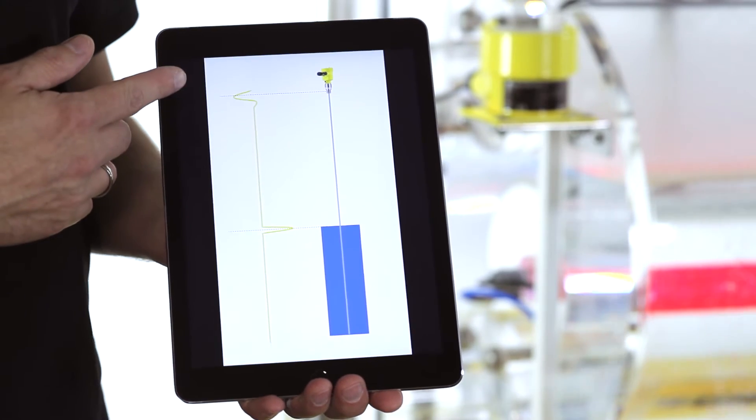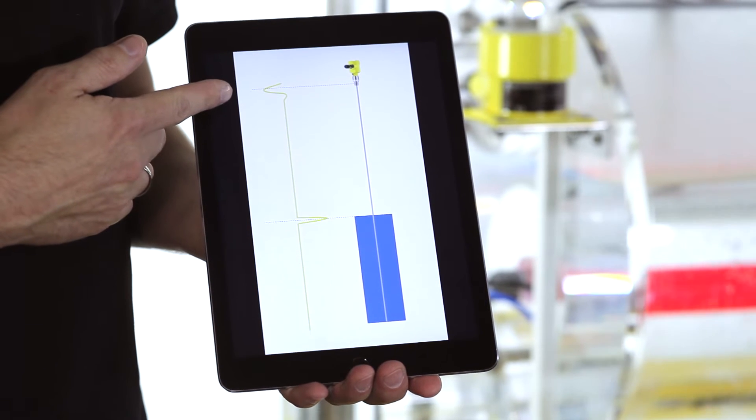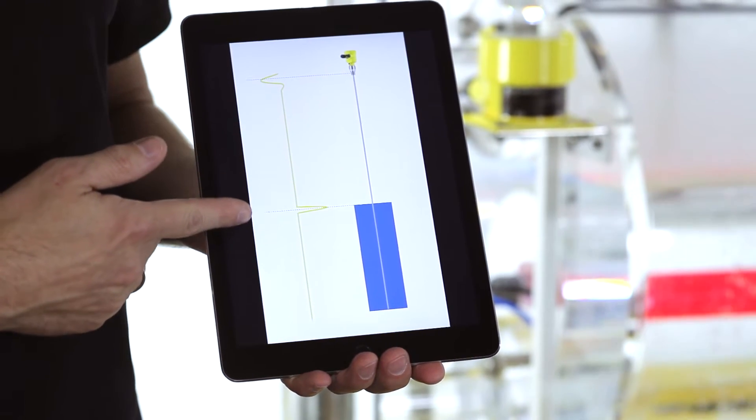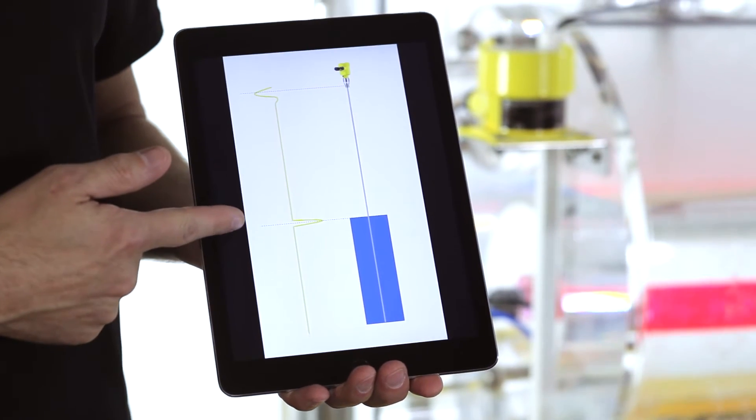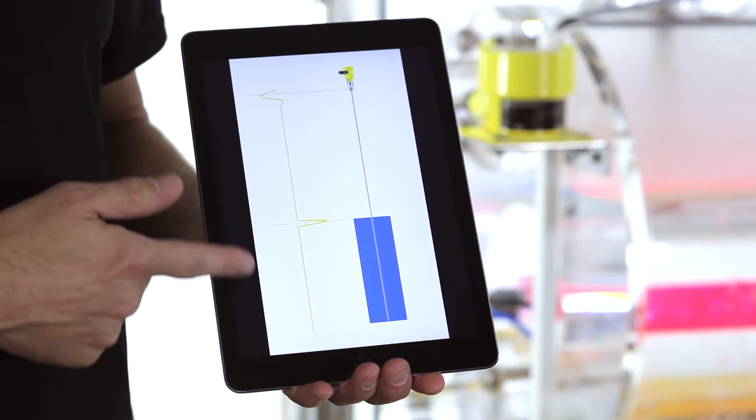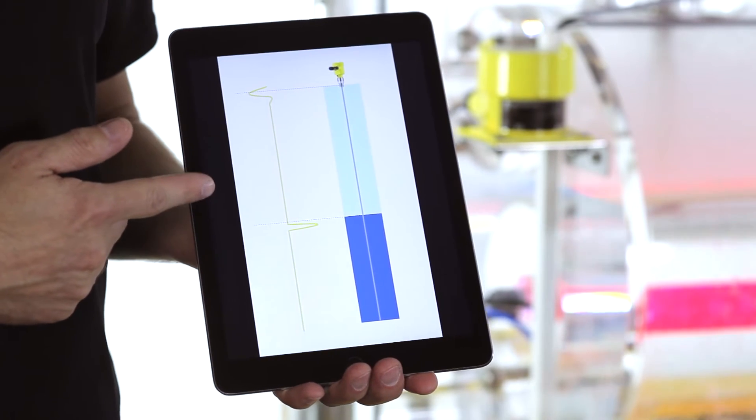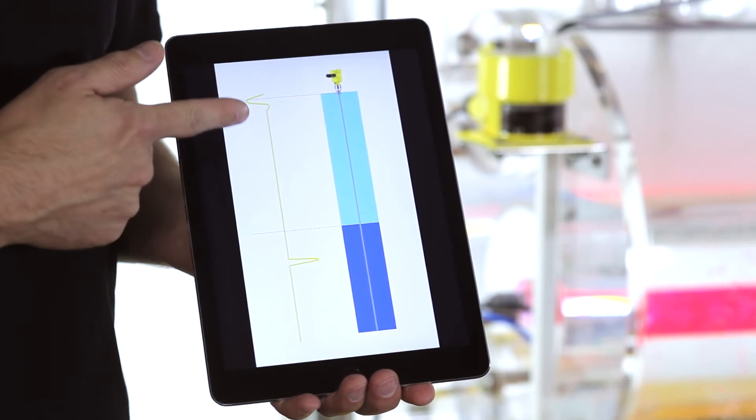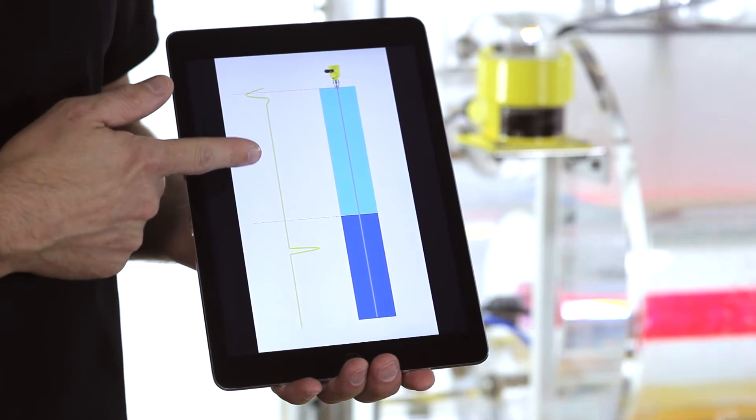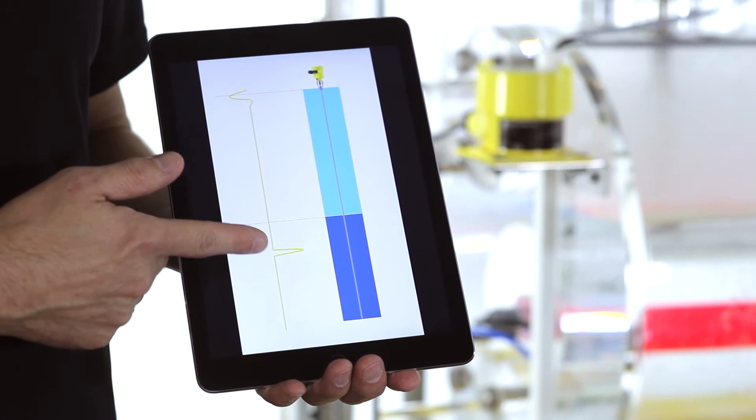Guided wave radar instruments generate high frequency energy which is reflected by the medium for level measurement. In steam boilers, however, the steam is influencing this high frequency energy so that there is a measurement deviation.